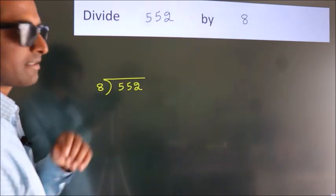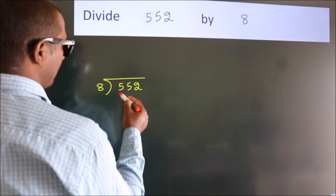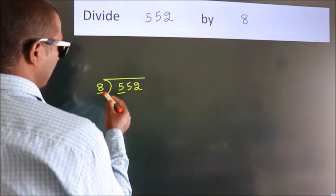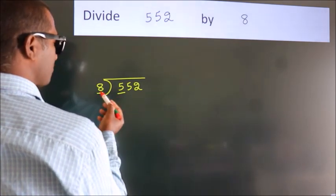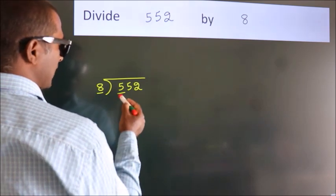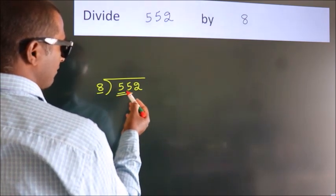Next, here we have 5, here 8. 5 is smaller than 8, so we should take two numbers: 55.